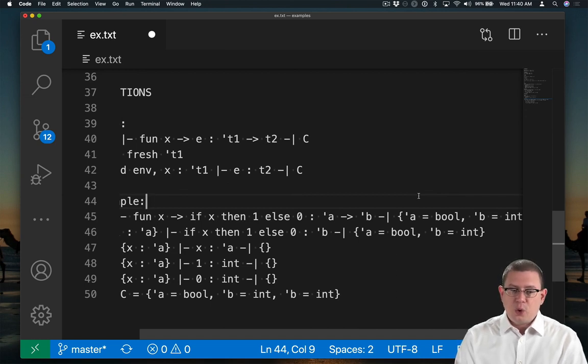the type of this function then must be bool arrow int. And that's probably no surprise. You guessed that right away when I wrote that down.